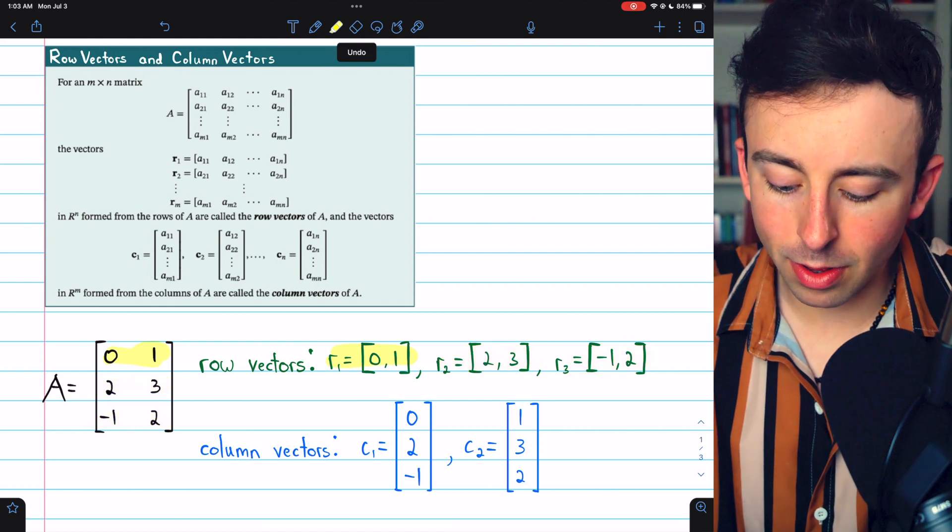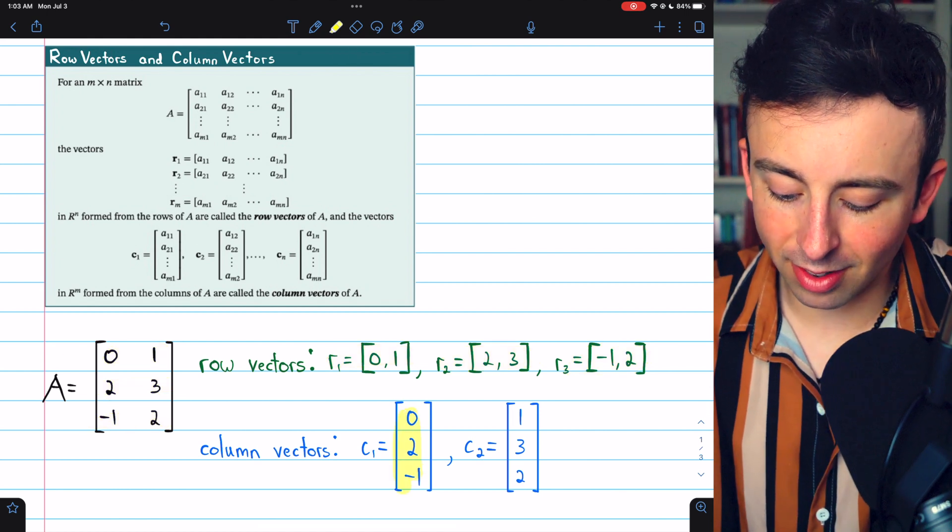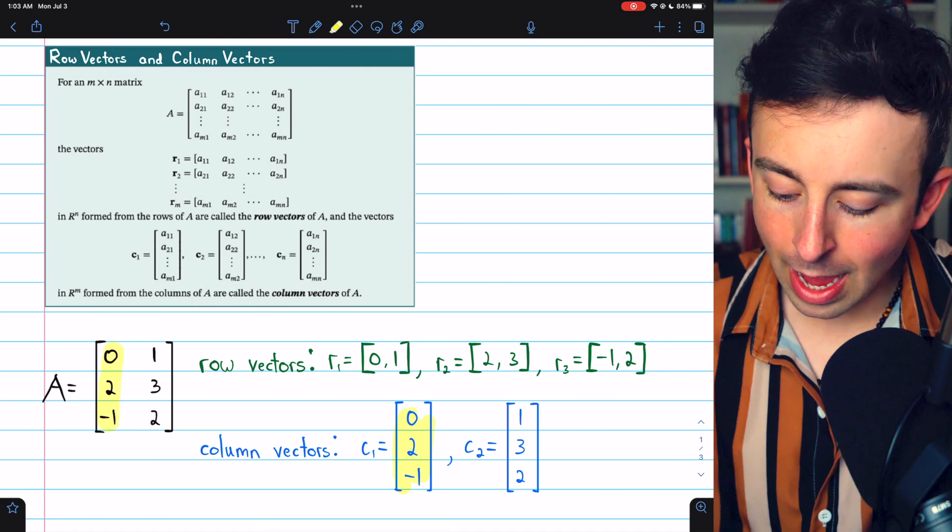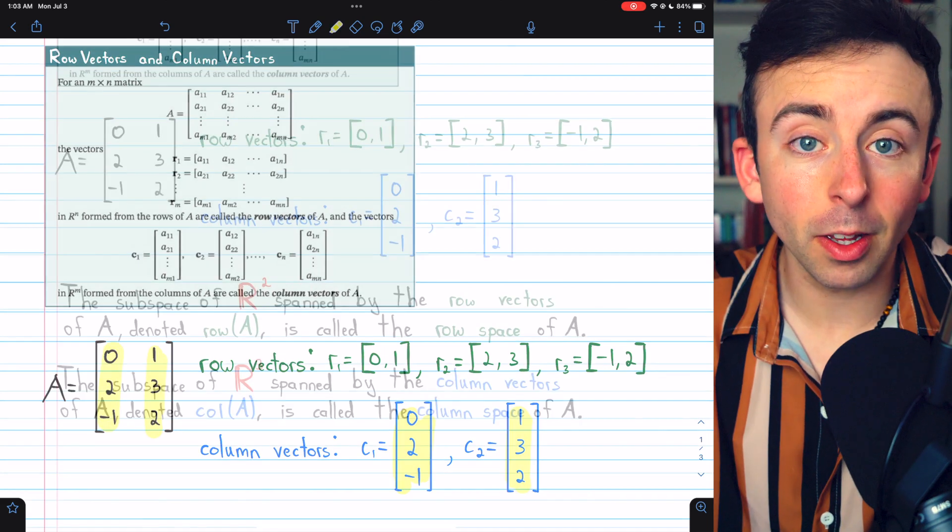Similarly, we could list out the column vectors. Here's C1, the first column, and C2, the vector for the second column.